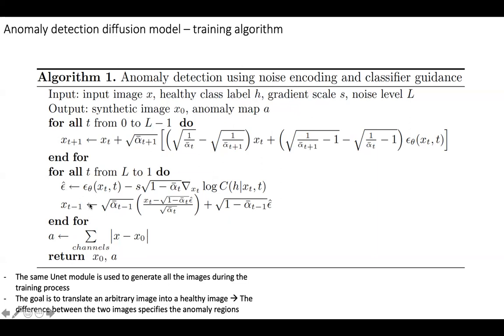image in the previous iteration, x_t minus one. Once all these steps are done, then we can use this diffusion model to get the difference map. One thing I want to mention here is the same unit module is used for the noising process and the reverse denoising process. The goal is, as I just mentioned, to translate all the input images into one specified class.